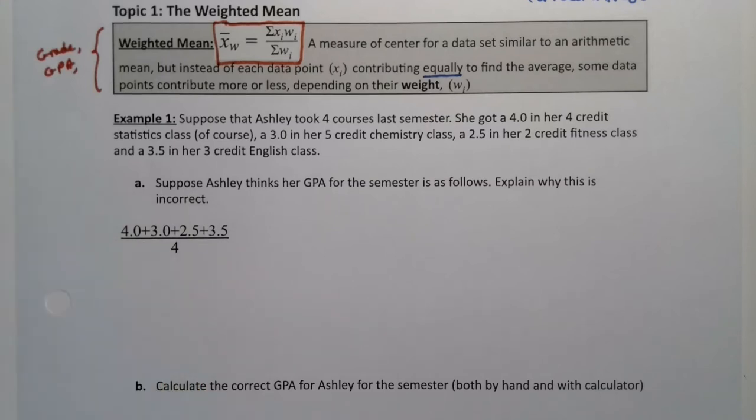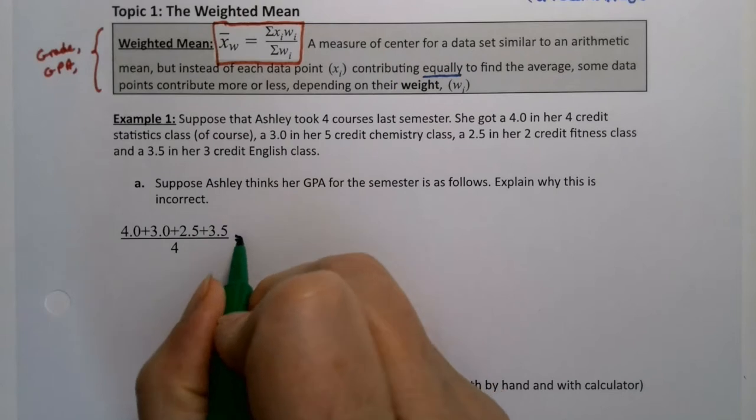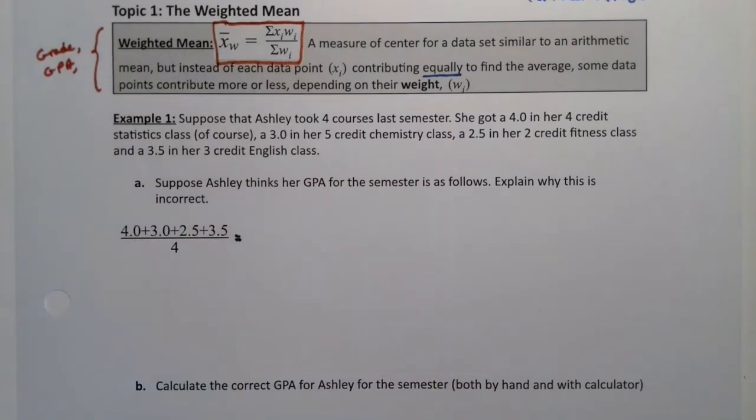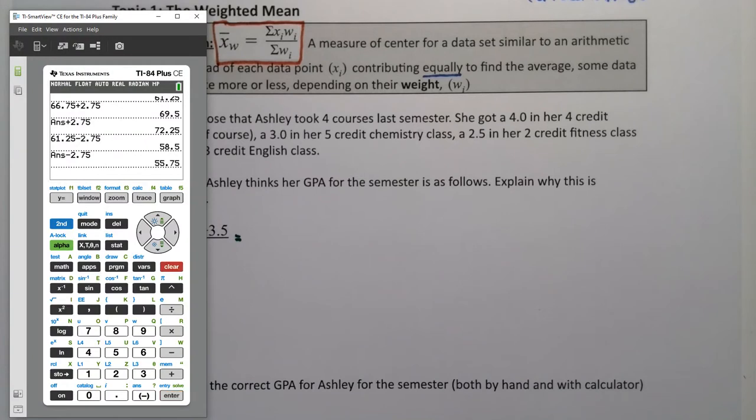She's missing the weights. Some values are worth more than others because they're worth more credits. The more credit a class is, the more it's worth. She's not taking into account that if you added all those up and divided by four - using the alpha F1 key, number one gets us a fraction - 4 plus 3.5 plus 2.5 plus 3, arrow down and divide by four, you get 3.25. So she thinks her GPA is 3.25.